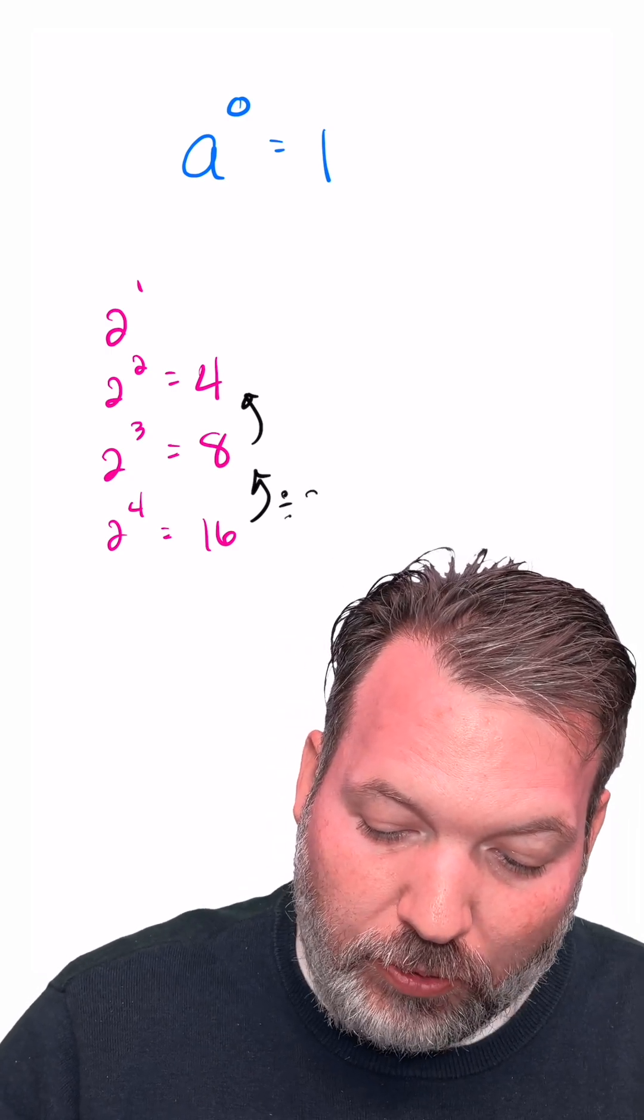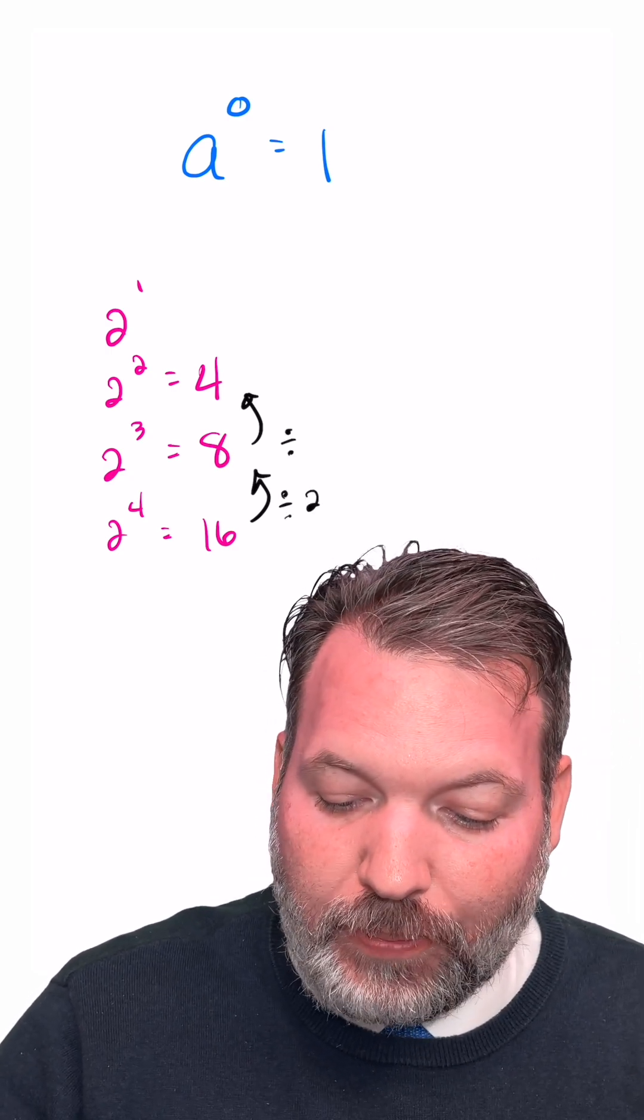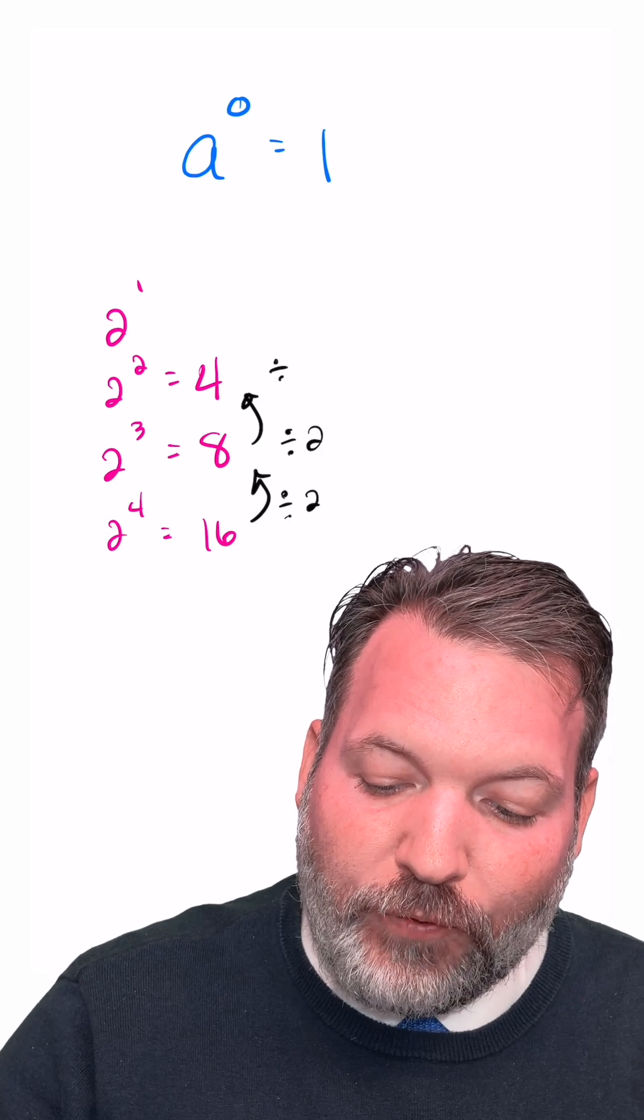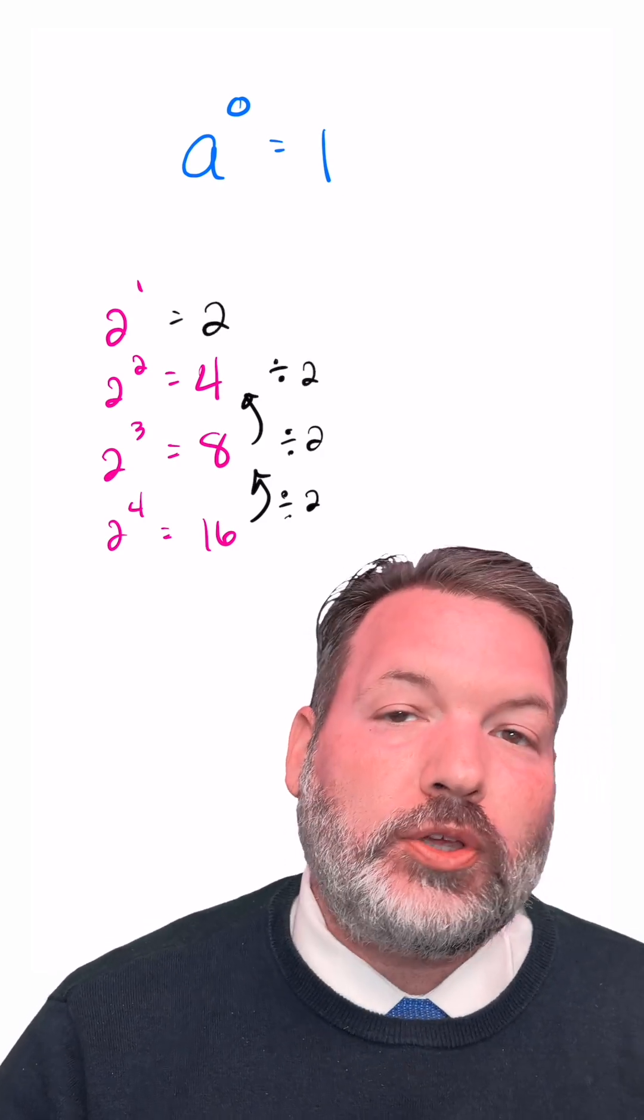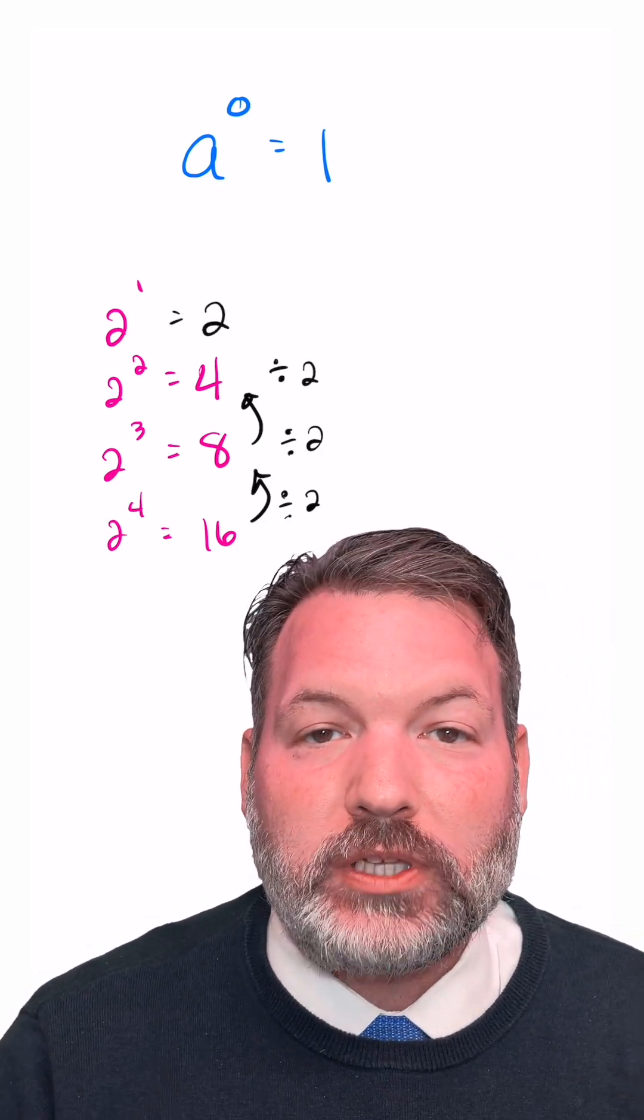16 divided by 2 gets you 8, 8 divided by 2 gets you 4, and then 4 divided by 2 gets you 2, which is the first power of 2.